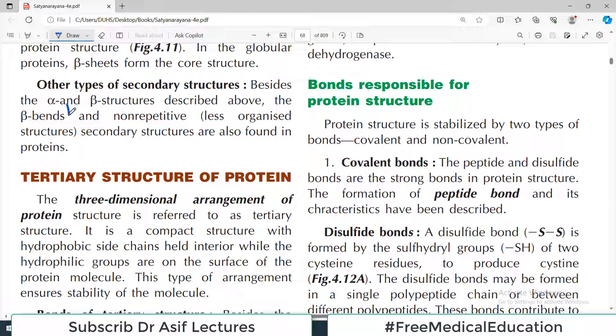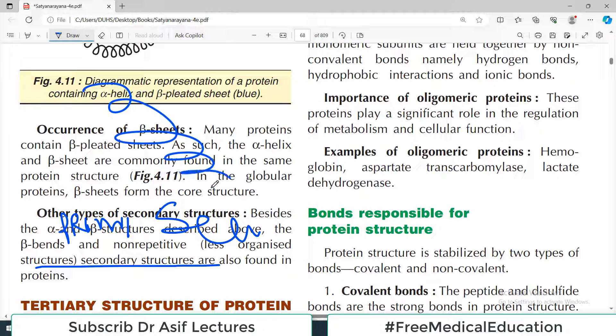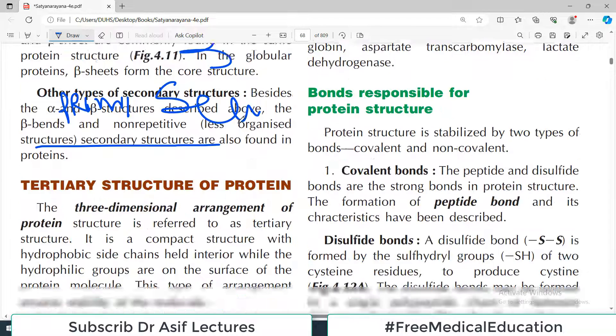In the previous video, we covered primary structure of protein, which means the single linear structure where amino acids are joined by peptide bonds. Then we talked about secondary structure, where there was either spiral arrangement, which we call alpha helix, or sheet arrangement, which we call beta-pleated sheets.